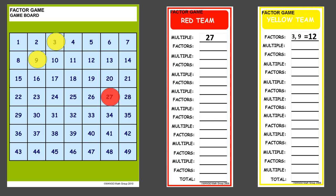Now let's say it's the yellow team's turn. They cover up 41 with the yellow marker and put 41 on their game board. The red team now has to find factors, but they realize they cannot find any factors other than 1 and 41. In this game you can only find proper factors — any factors other than 1 and the number itself — so they cannot score any points off of 41. They need to erase it and get no points for that round of play. The red team can leave the counter on or take it off to remember not to cover it again.